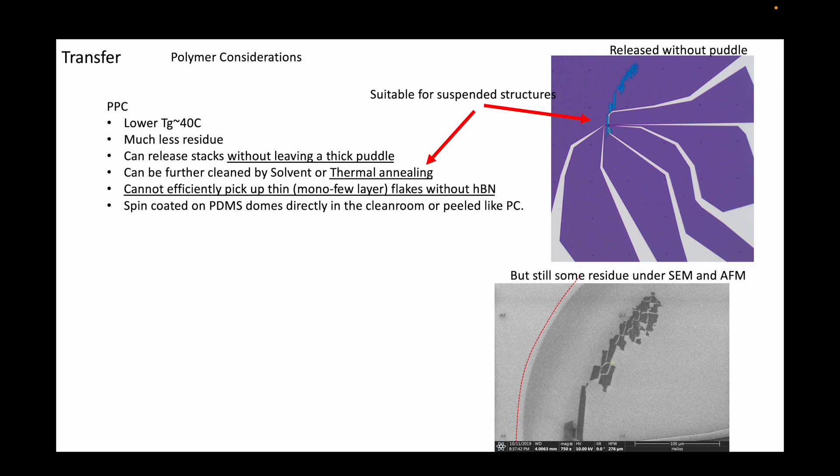However, one should note that even though optically it doesn't seem like there's any residues, scanning electron microscopy and atomic force microscopy quickly reveals that there is about a nanometer thick layer of residues left behind after the transfer. These residues, however, can be easily removed by solvents like dichloromethane, thermal annealing or oxygen plasma.